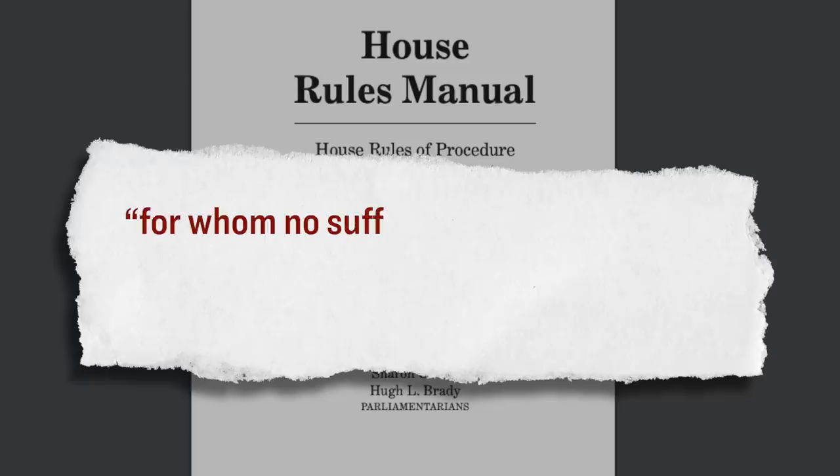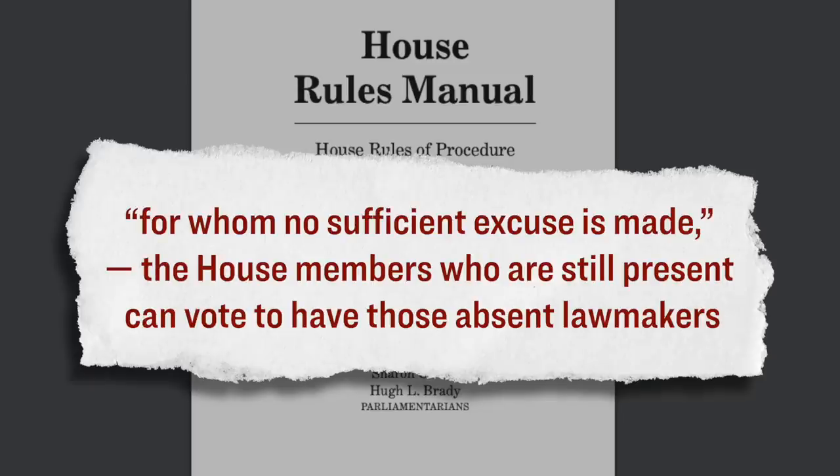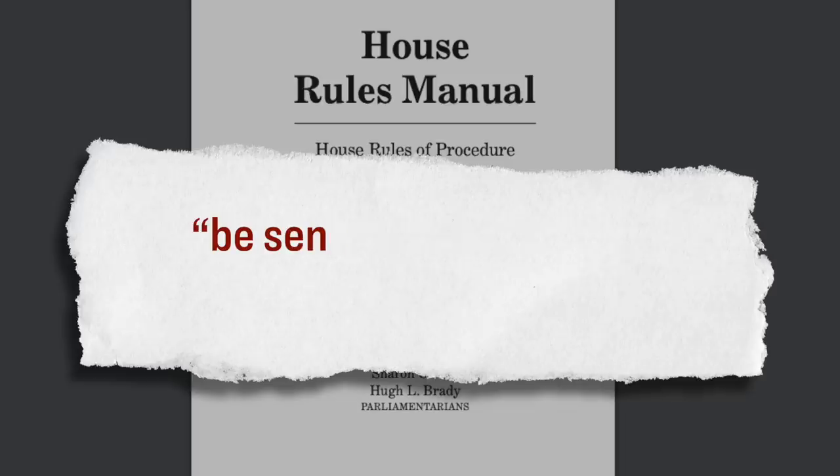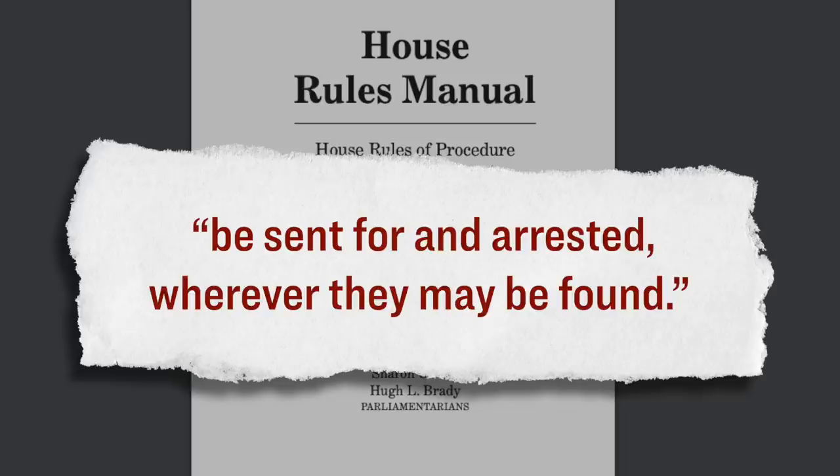However, it looks like they will now be facing consequences. That's because the Speaker of the Texas House, Mr. Dade Fellon, he is invoking his authority to have these lawmakers arrested. But the question is, can he actually do that? Well, it looks like he can. Because according to the rules of the Texas House, at least two-thirds of the chamber must be present to conduct business. However, that same rule then goes on to say that if there are absent lawmakers for whom no sufficient excuse is made, the House members who are still present can vote to have those absent lawmakers be sent for and arrested wherever they may be found. And so exactly one month ago, Texas House Republicans voted in favor of tracking down these absent Democrats and potentially arresting them if they weren't willing to comply and come back.